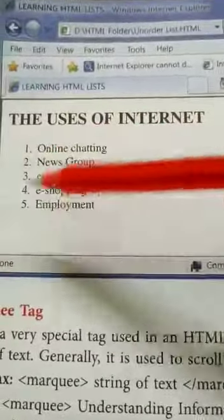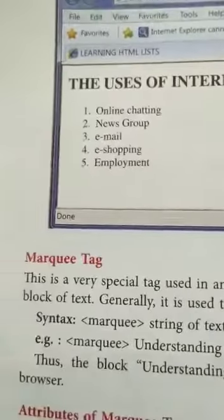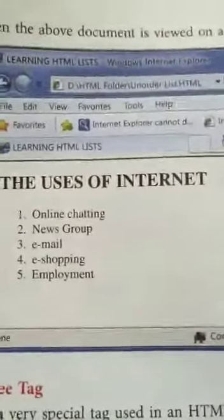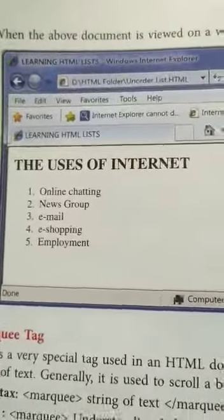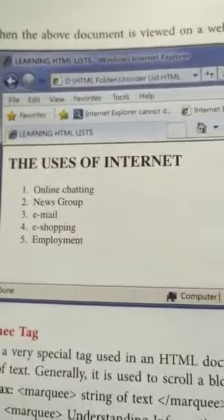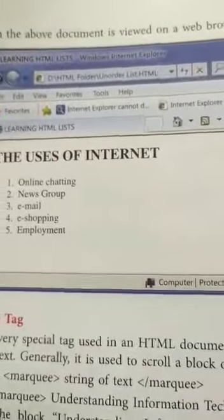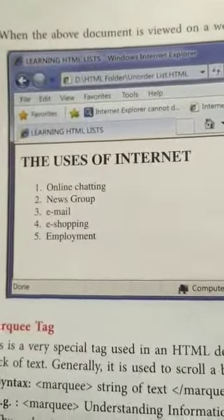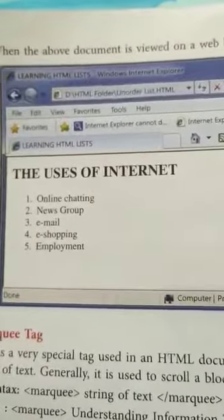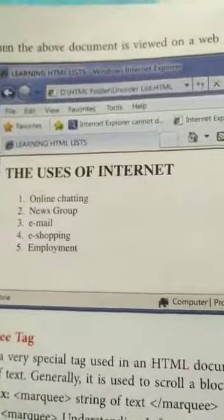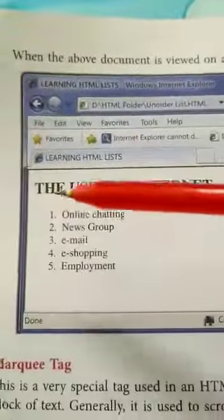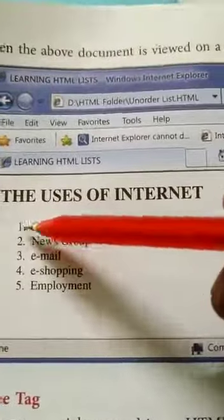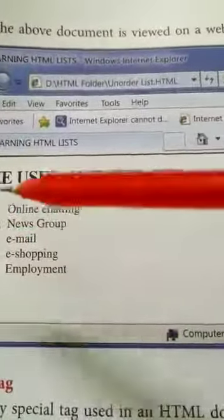By default it gives numbering. When you want letters, you have to specify 'a, b, c' — that is one way. So this is the output: ordered list vs. unordered list. Unordered list is for bullets, and ordered list is mainly for numbering — instead of bullets, here it is one, two, three. That is the number.